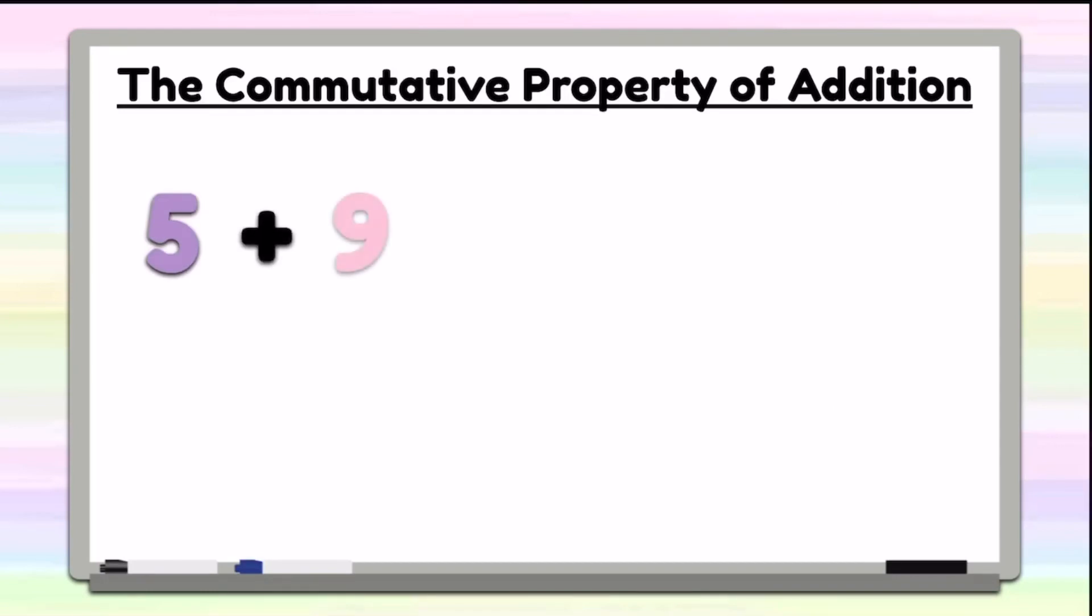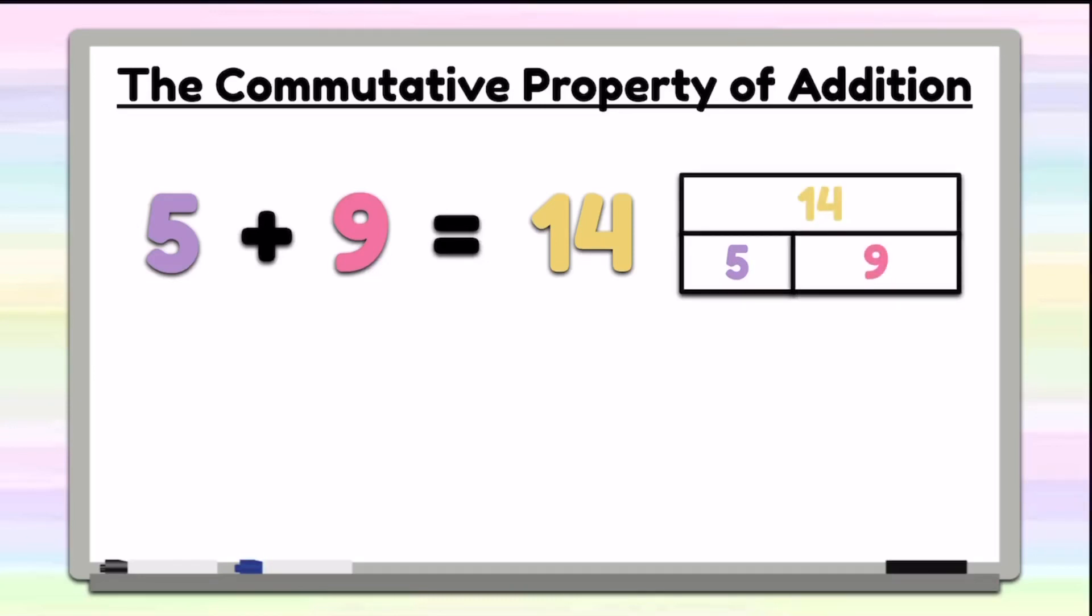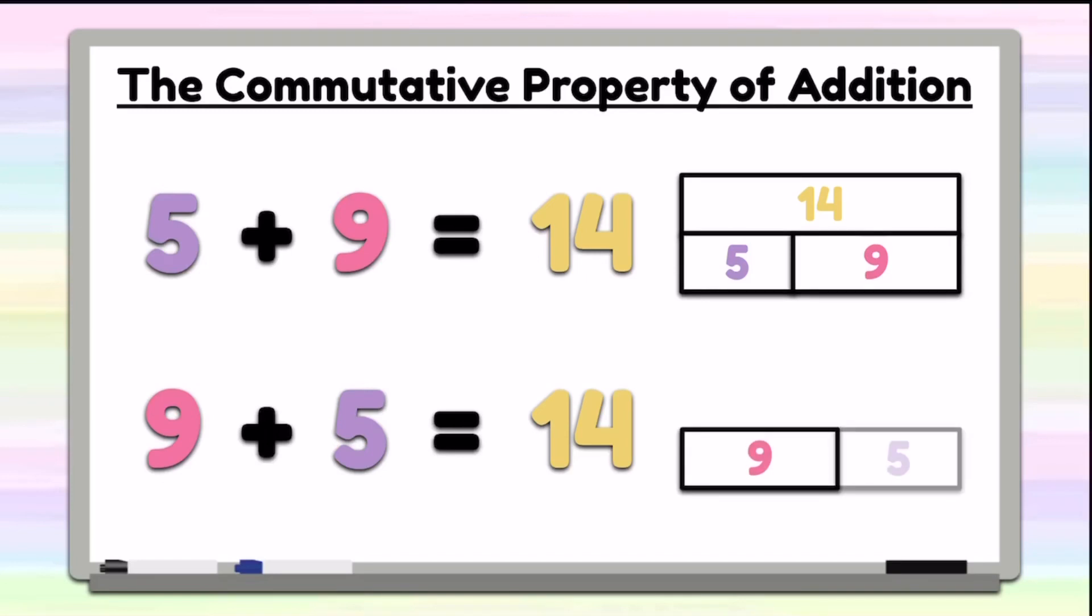5 plus 9 equals 14. We have 5, and we're adding 9 more, which we know gives us a total of 14. So that means if we add 9 plus 5, we will also get 14. Here we notice we have 9 plus 5, and our whole or total is still 14.